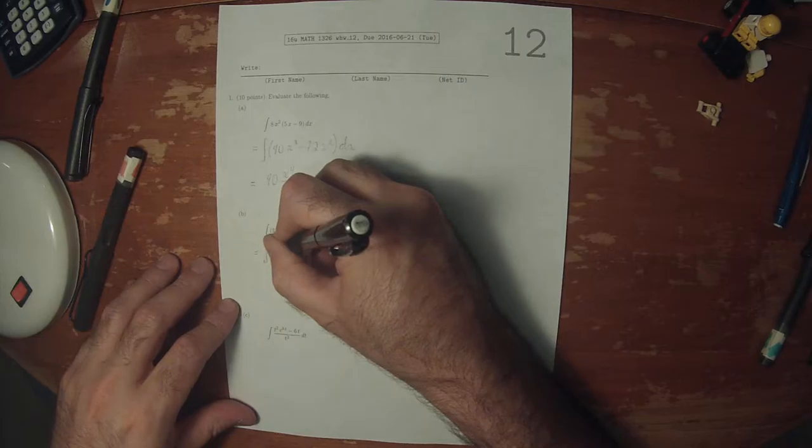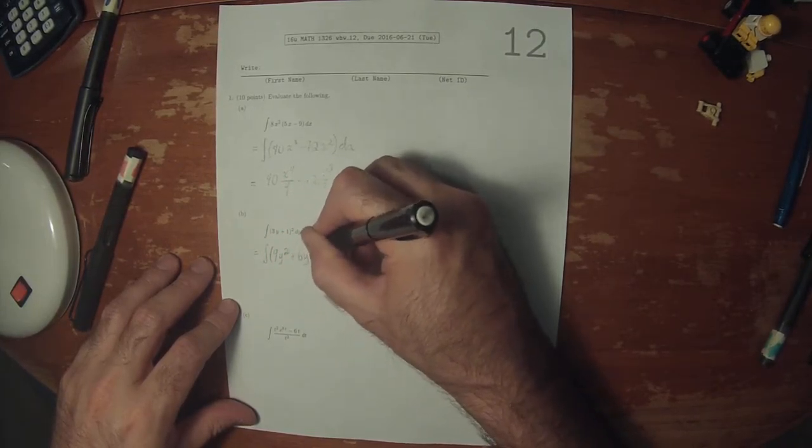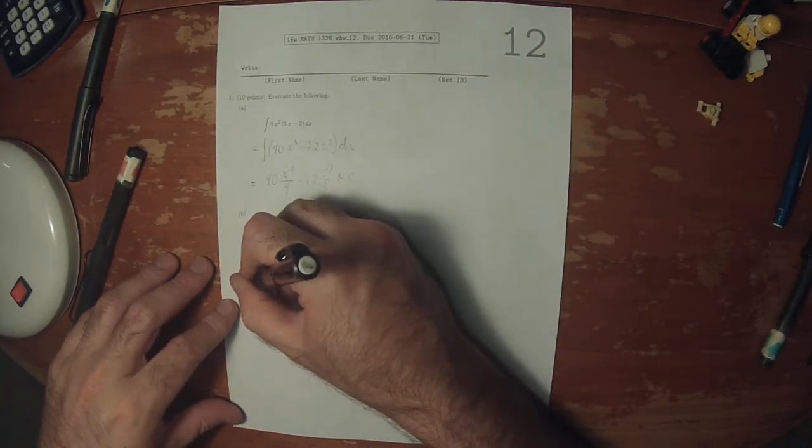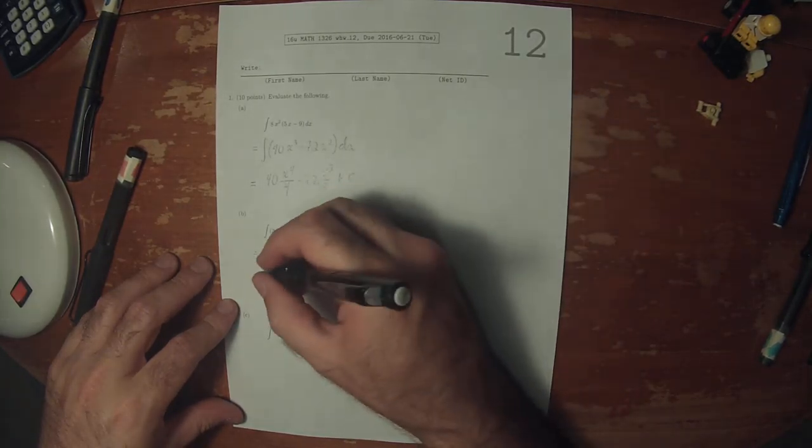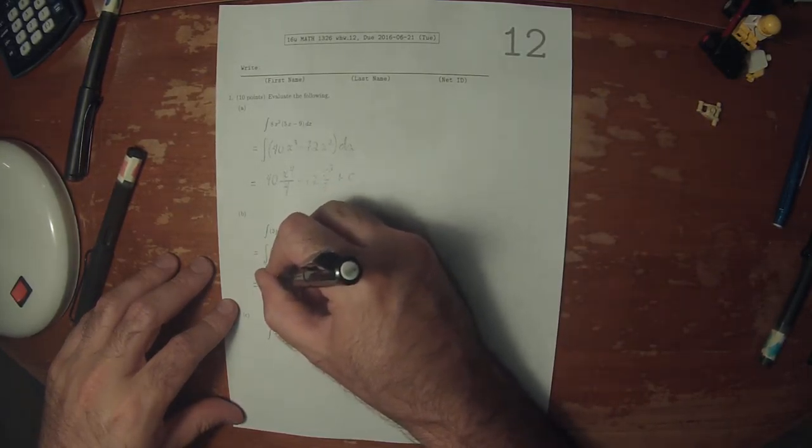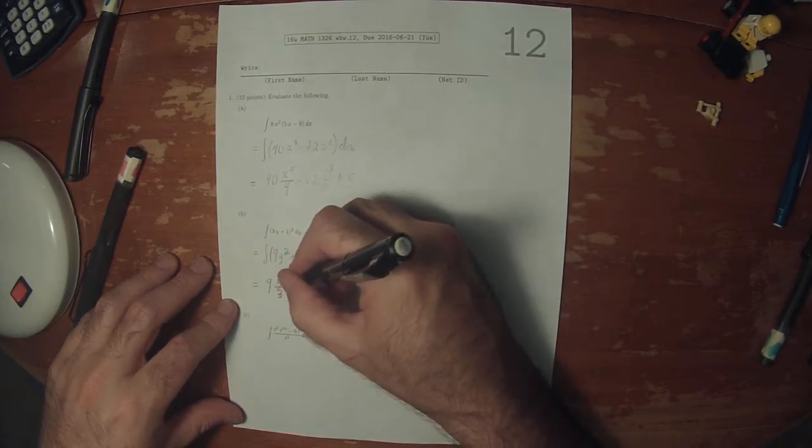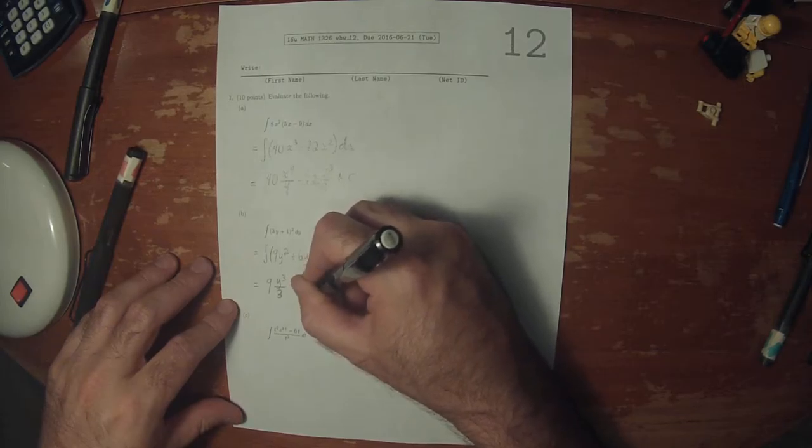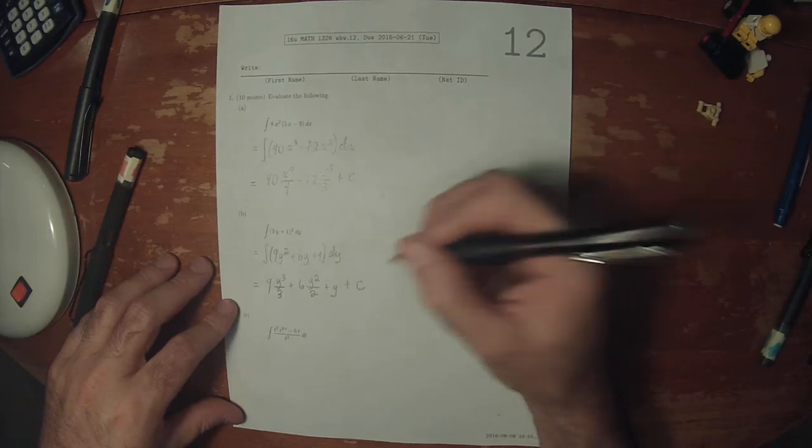So that would be 9y squared plus 6y plus 1 dy, and now each of these terms is an antiderivative that we know. So that would be 9y cubed over 3, plus 6y squared over 2, plus y, plus a constant.